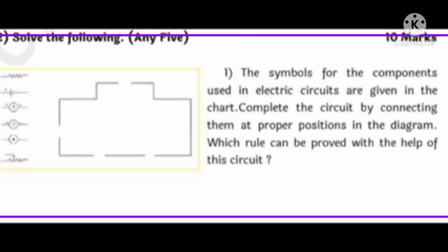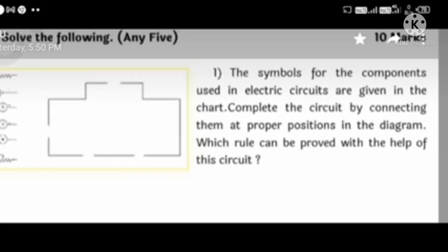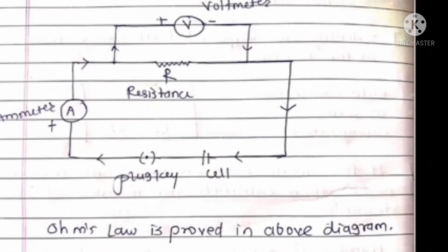Question number second: Solve the following, any five for 10 marks. The symbols for the components used in the electric circuits are given in the chart. Complete the circuit by connecting them at proper positions in the diagram. Which rule can be proved with the help of this circuit? The given figure shows the electric circuit. In the blank spaces, we have to fill the proper symbols.